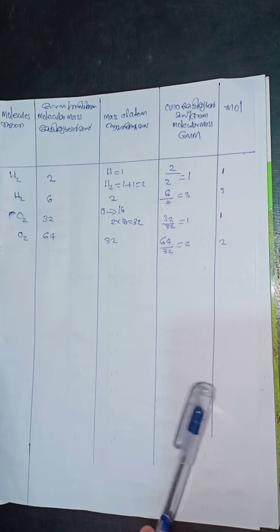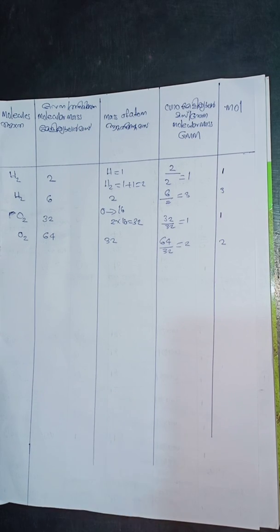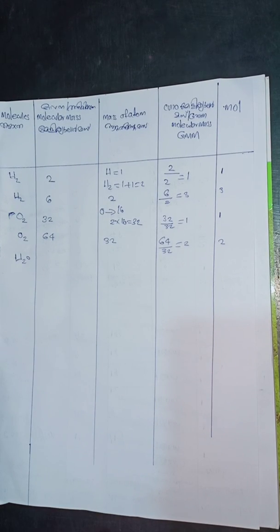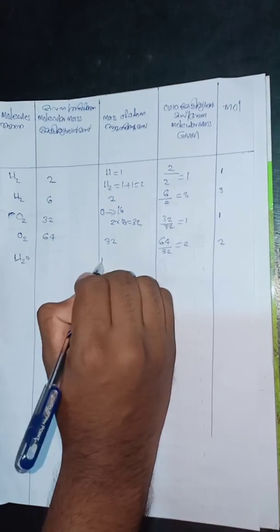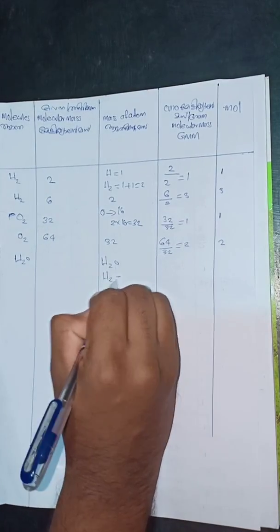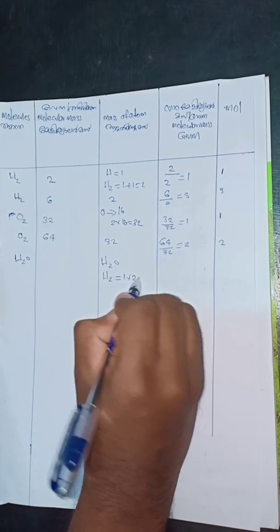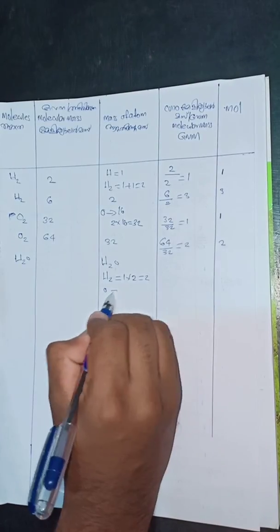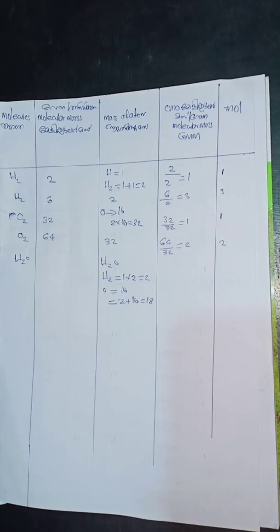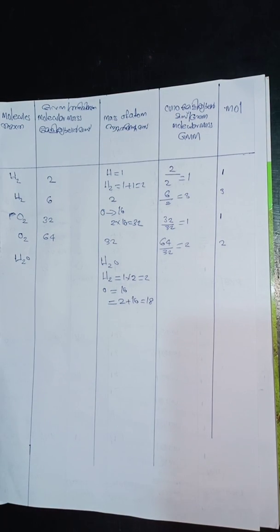Next example is H2O — water. For water: hydrogen is 2, oxygen is 16. We calculate the total molecular mass of water.